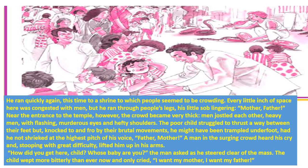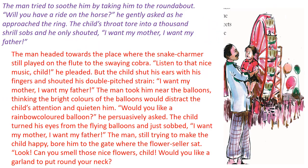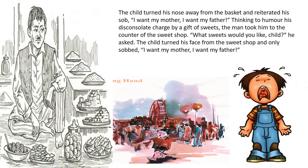Now that the child has someone to listen to him, he cries more bitterly: 'I want my mother, I want my father.' The man tries to distract the child. He takes him to the roundabout and asks 'Will you have a ride?' The child says 'No, I want my mother.' The man goes to the snake charmer: 'Do you want to listen to the music?' But the child shuts his ears with his fingers. He takes him to the balloons: 'Do you want a nice colorful balloon?' Again: 'No, I want my mother, I want my father.'